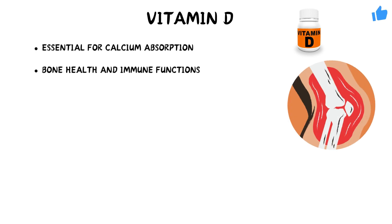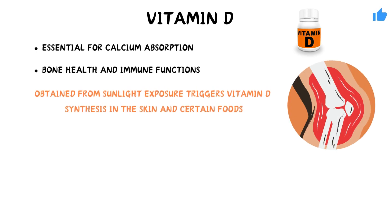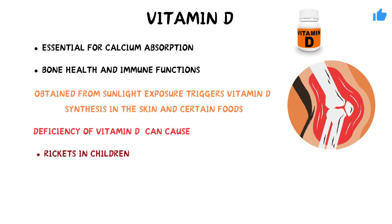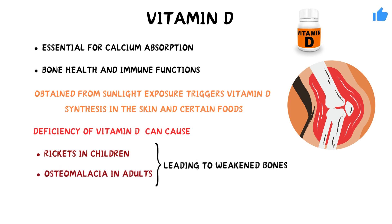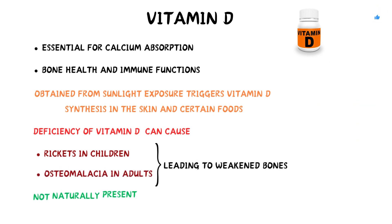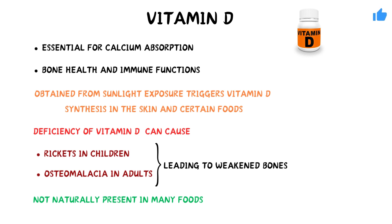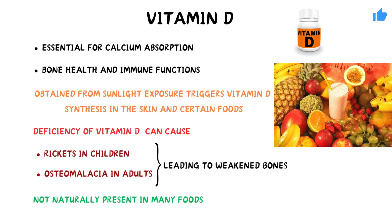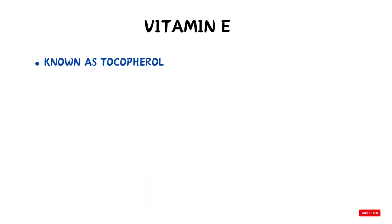Vitamin D is essential for calcium absorption, bone health, and immune function. Sunlight exposure triggers vitamin D synthesis in the skin, and it can also be obtained from certain foods. Deficiency of vitamin D can cause rickets in children and osteomalacia in adults, leading to weakened bones. Vitamin D is not naturally present in many foods, but sources include fatty fish and fortified foods like milk, orange juice, and cereals.